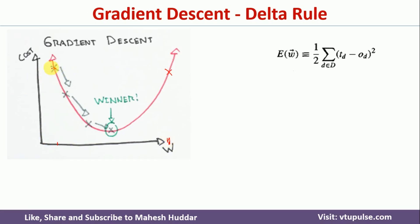Looking at these two different points: if the error is on one side, we want to move toward the minimum. On the other side as well, we want to come toward the minimum. What we need to do is reduce this error. To reduce the error, we need to modify the weights. If the error is on the left side (negative slope), we need to increase the weights; if on the right side (positive slope), we need to decrease the weights. Our goal is to find the set of weights that points to the minimum error.